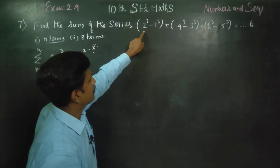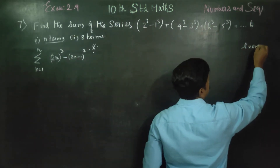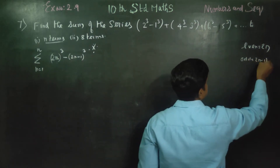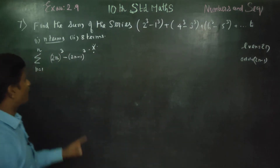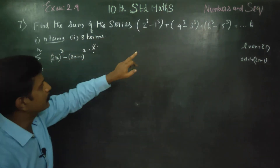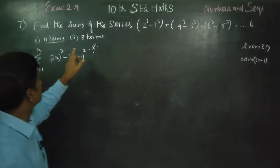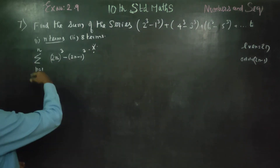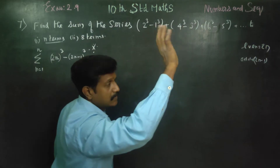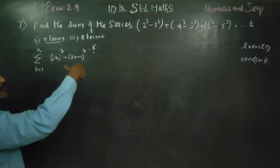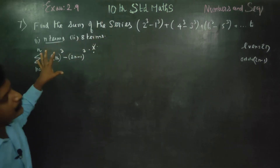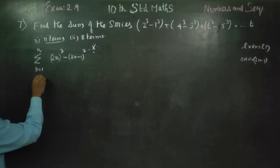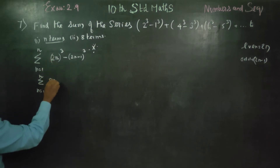This is an even number. Even number has a formula — don't forget. Even number is 2n, odd number formula is 2n minus 1. n starts at 1. So we have sigma from n equals 1 to n, of the bracket expression. Sigma n is equal to 1 to n, giving 8n cube.